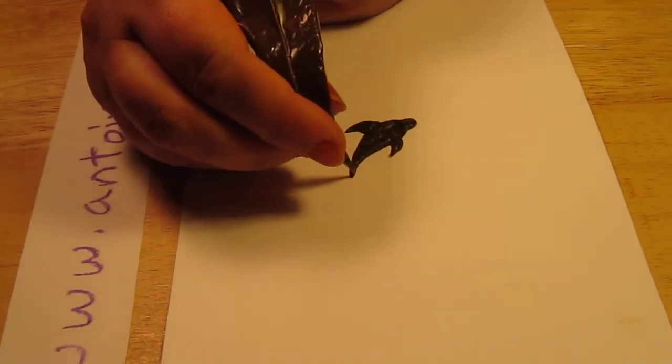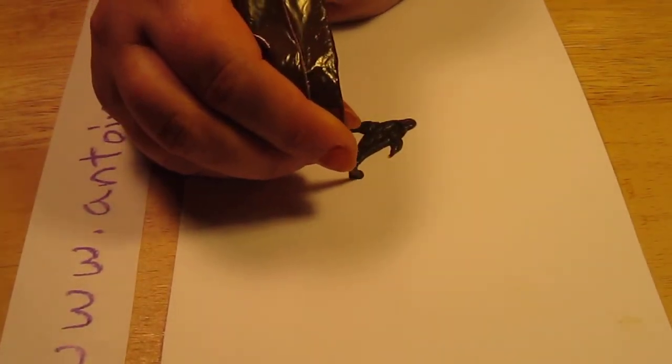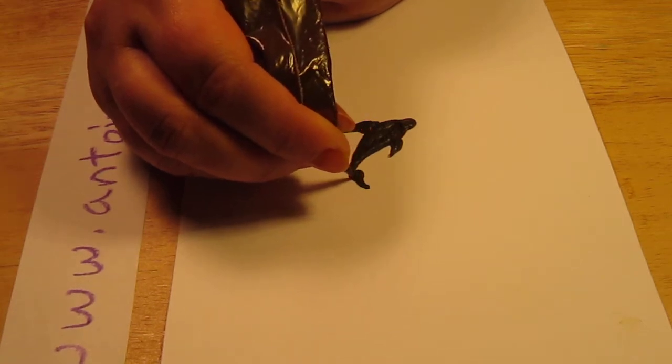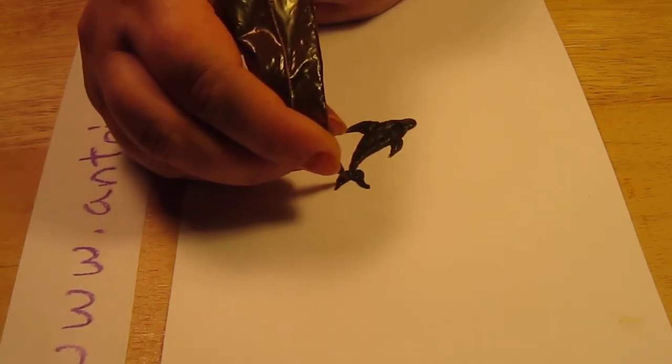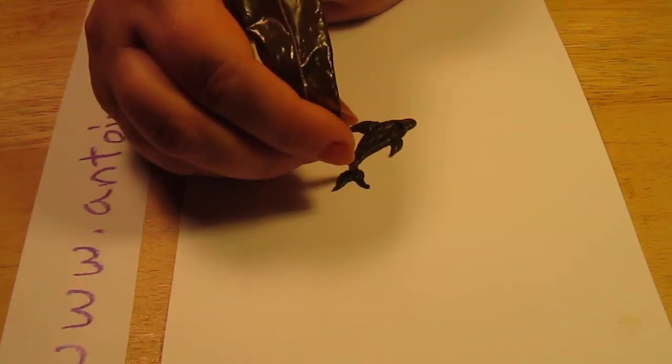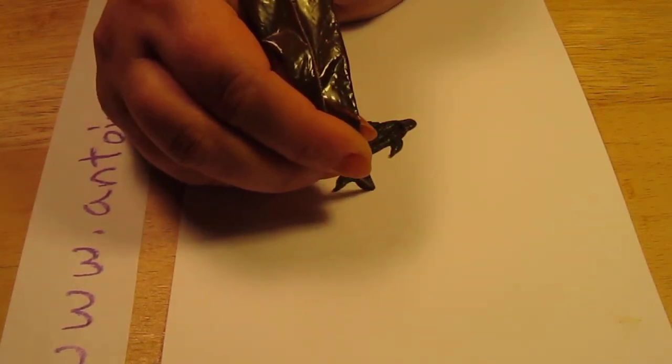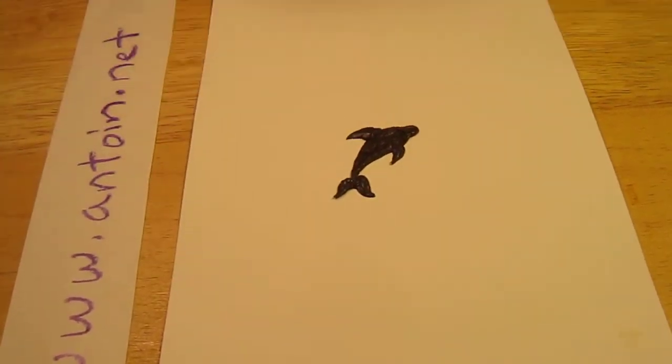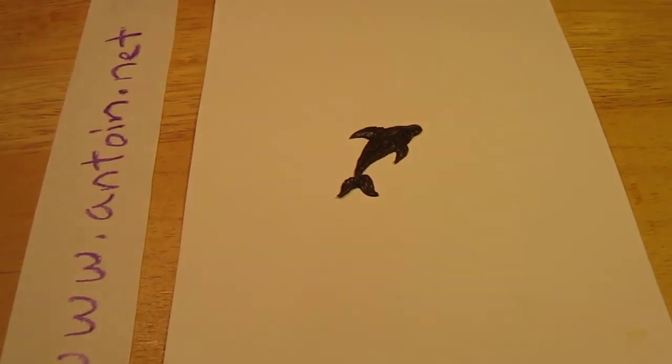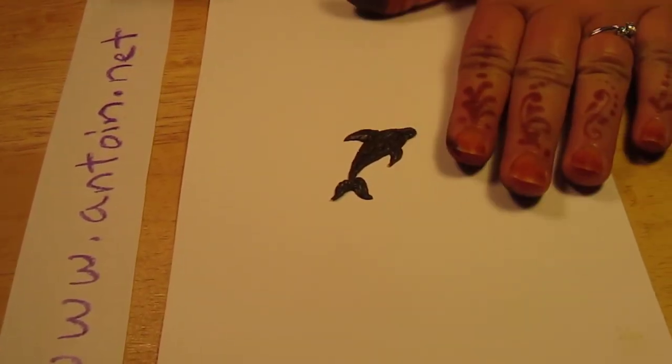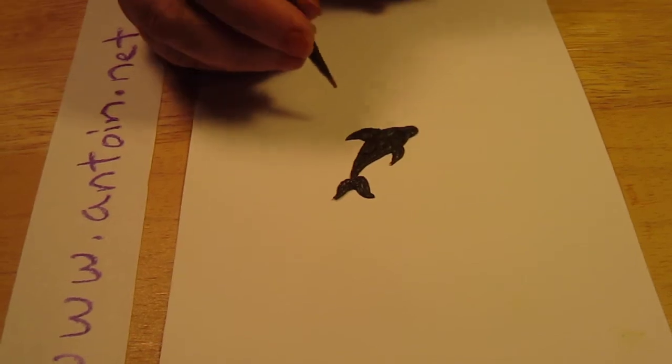And then the tail is again just kind of teardrops. And how's that for a small dolphin? I mean that is... That's pretty small. That's a pretty tiny dolphin.